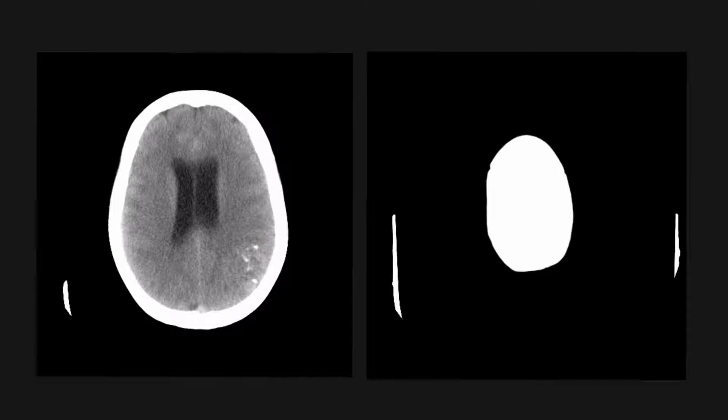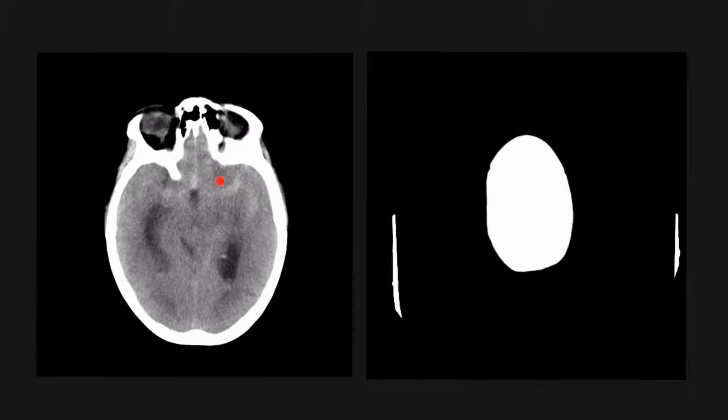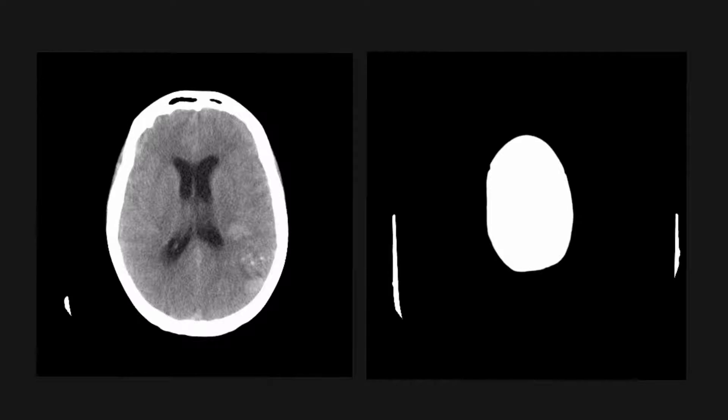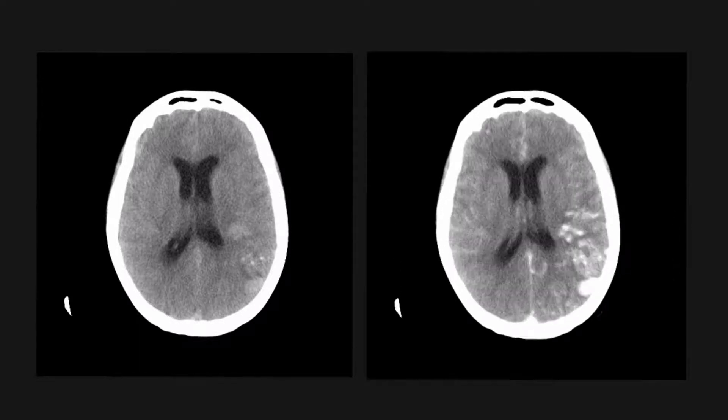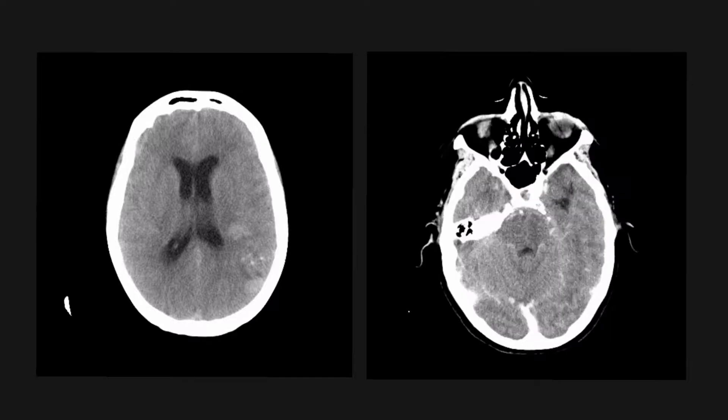Subarachnoid haemorrhages can also be due to AVMs as mentioned. In this case, we can see abnormal calcification in the left parieto-occipital lobe, in keeping with an AVM which has bled and caused an acute subarachnoid haemorrhage. This has led to sulcal effacement as well as hydrocephalus. This post-contrast scan confirms the AVM with acute subarachnoid haemorrhage.